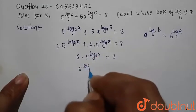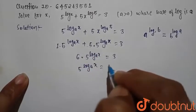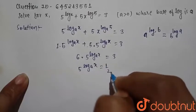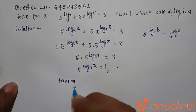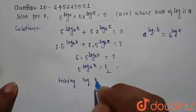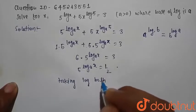From here we can say log a x equals 3 divided by 6 that is 1 by 2. Now we are taking log both sides.